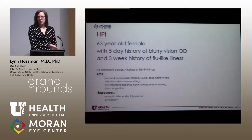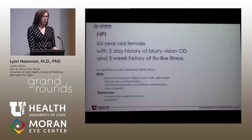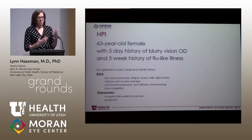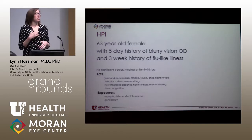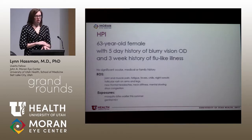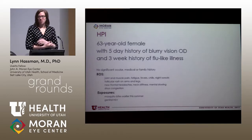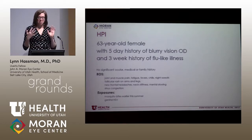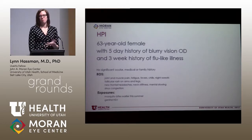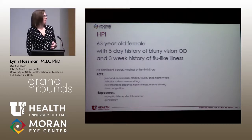She has no significant past medical, ocular, or family history, but on review of systems she has joint pain, muscle pain, fatigue, chills, and night sweats. She has a follicular-type rash on her arms and legs, new frontal headaches, some neck stiffness, mental slowing, and sinus congestion. So she's obviously sick.